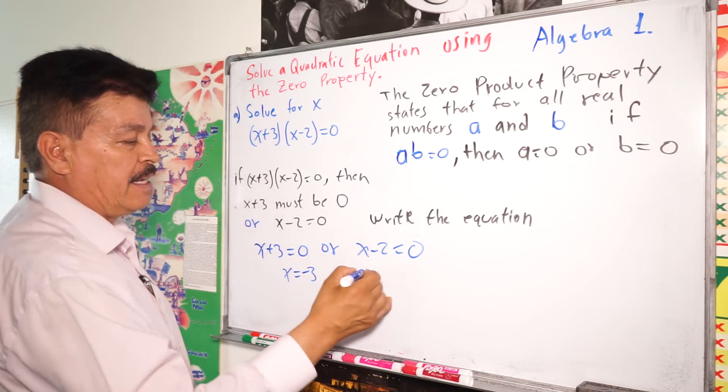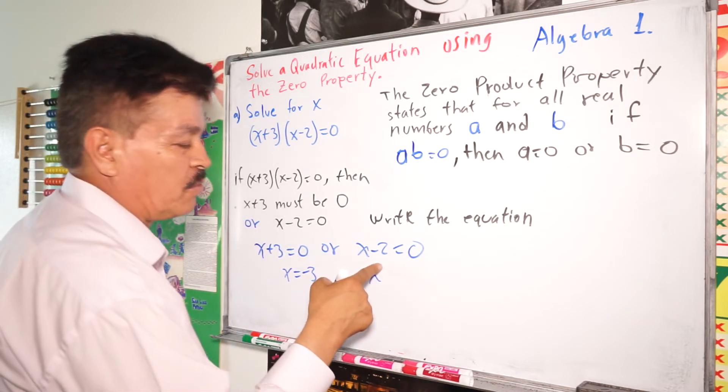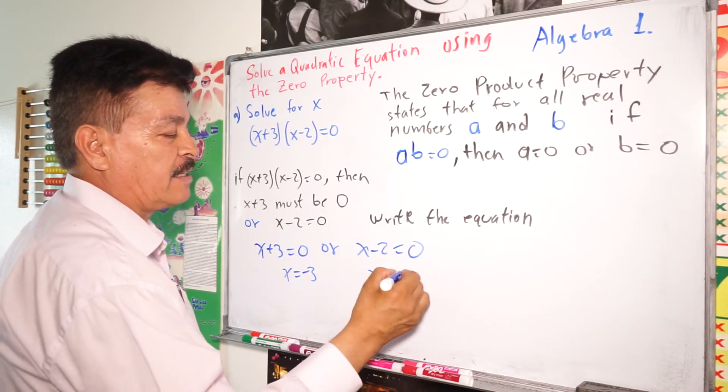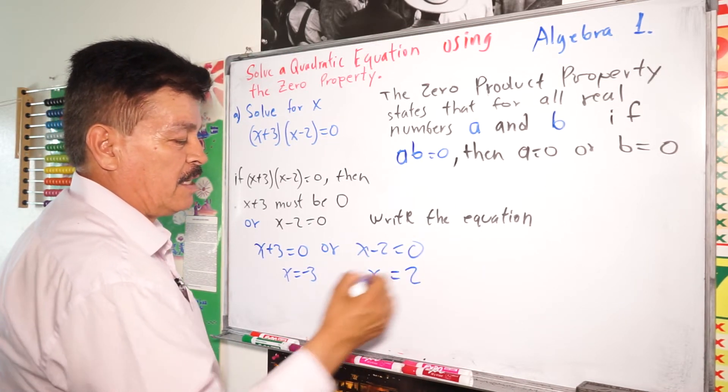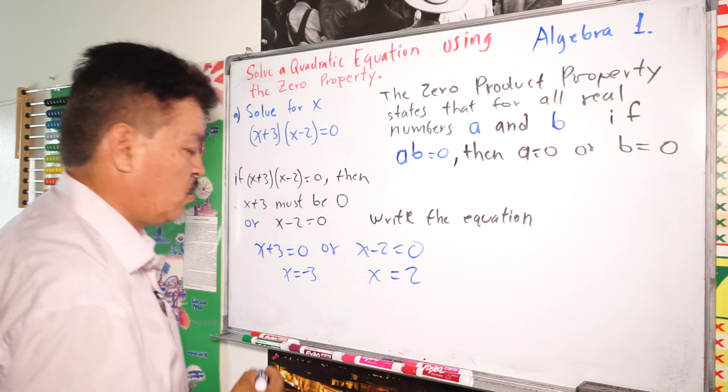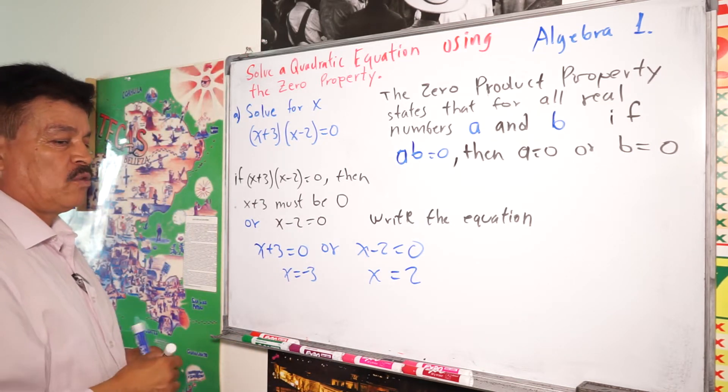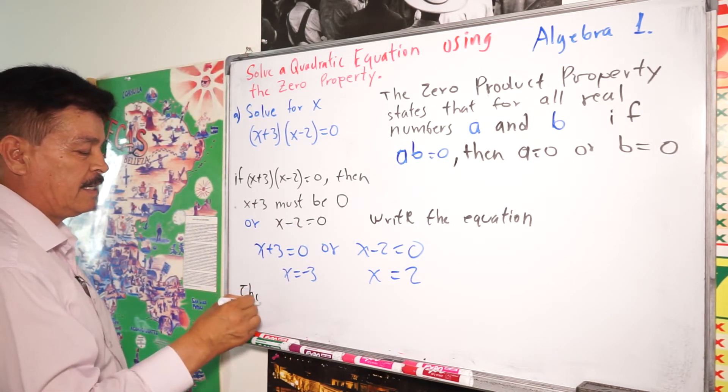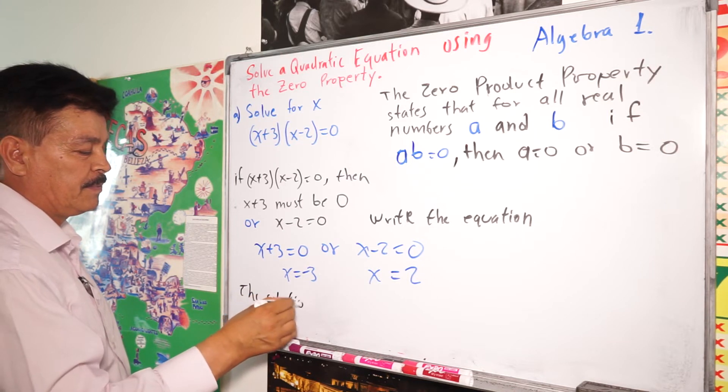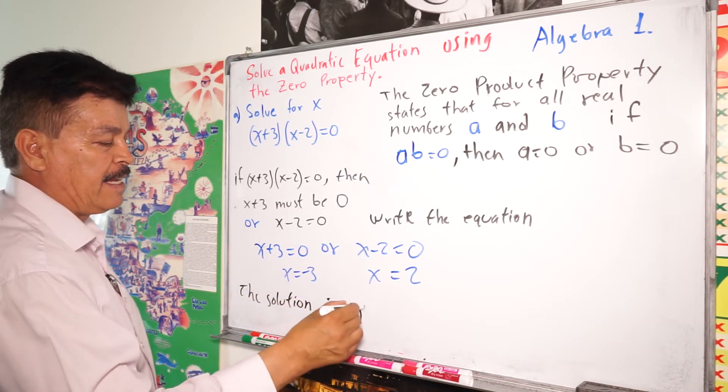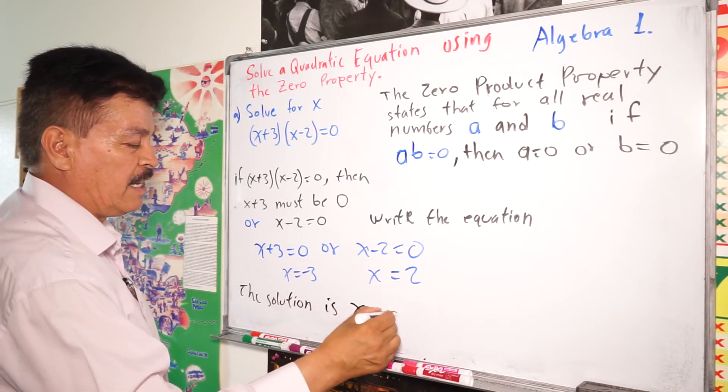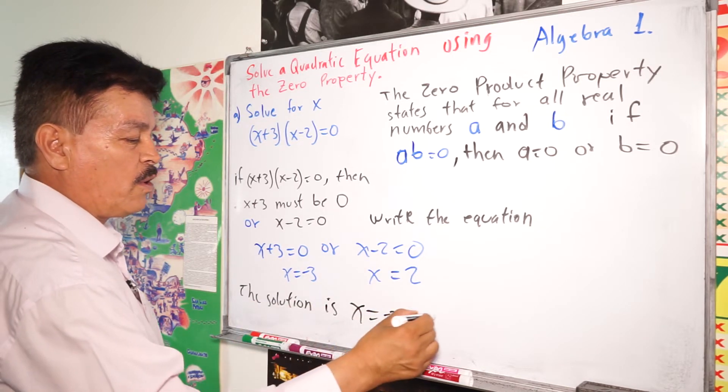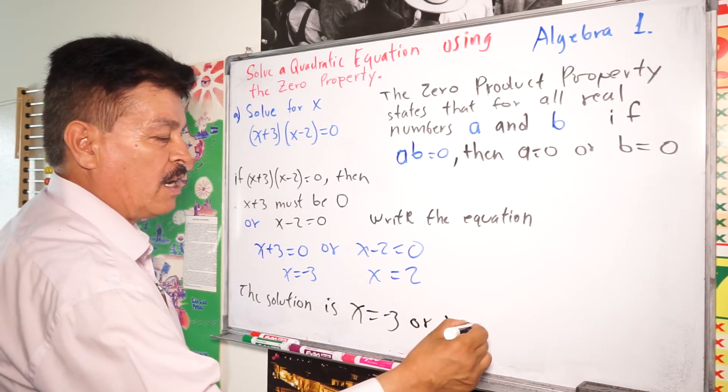See? You move to the other side. Here it says it's a subtraction. You move to the other side, it's addition. So it's going to be like this, 2. So the solution is x = -3 or x = 2.